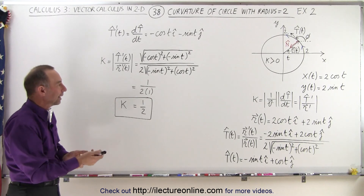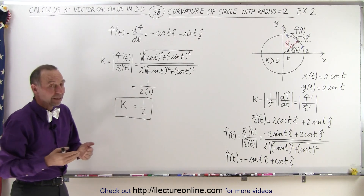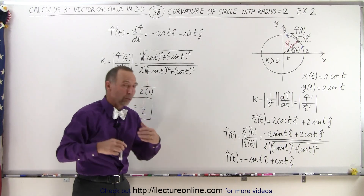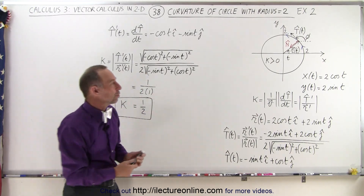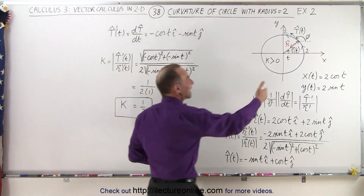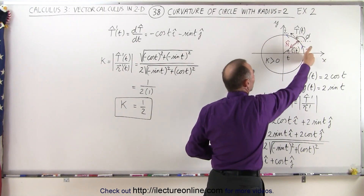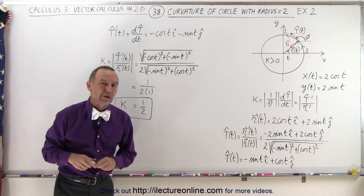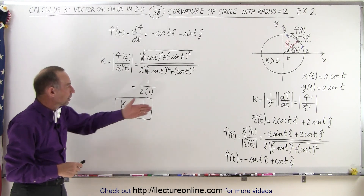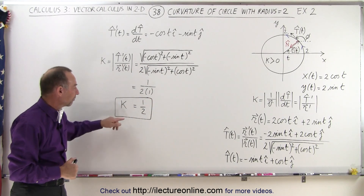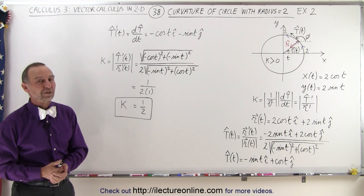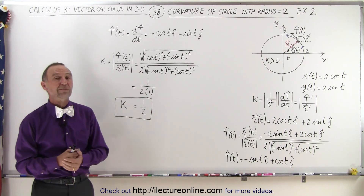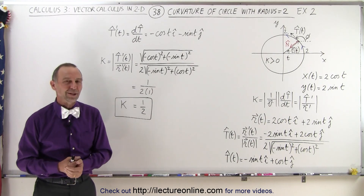This is the exact same value we got in the previous video, except in the previous video we used the derivative with respect to s — the arc length along the curve. In this case, we use the parametric variable t to define the position vector, and from that we get the exact same value for k. So it works either way — either equation is just fine to find the curvature, and that's how it's done.